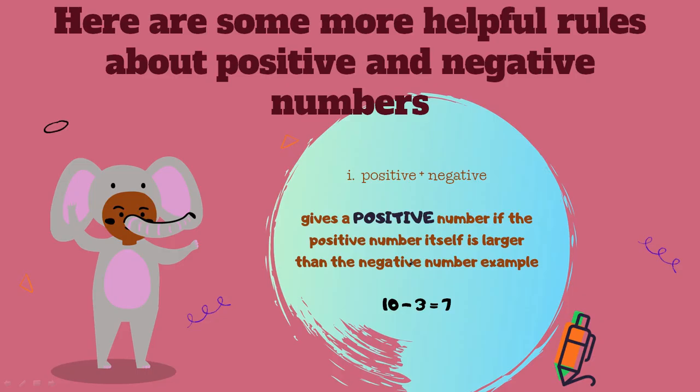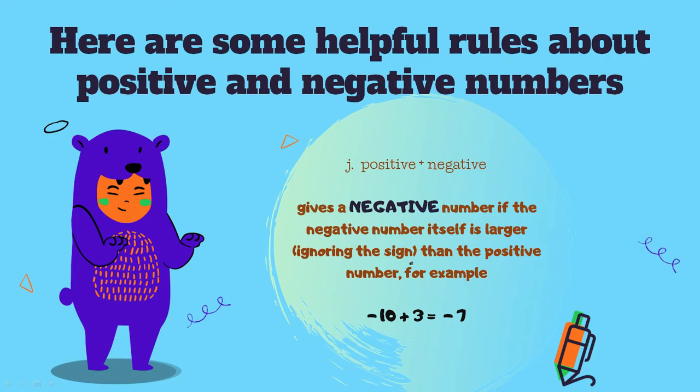Here are some more helpful rules about positive and negative numbers. Rule I: positive plus negative gives a positive number if the positive number itself is larger than the negative number — for example, ten minus three equals seven. Rule J: positive plus negative gives a negative number if the negative number is larger (ignoring the sign) than the positive number — for example, negative ten plus three gives you negative seven.